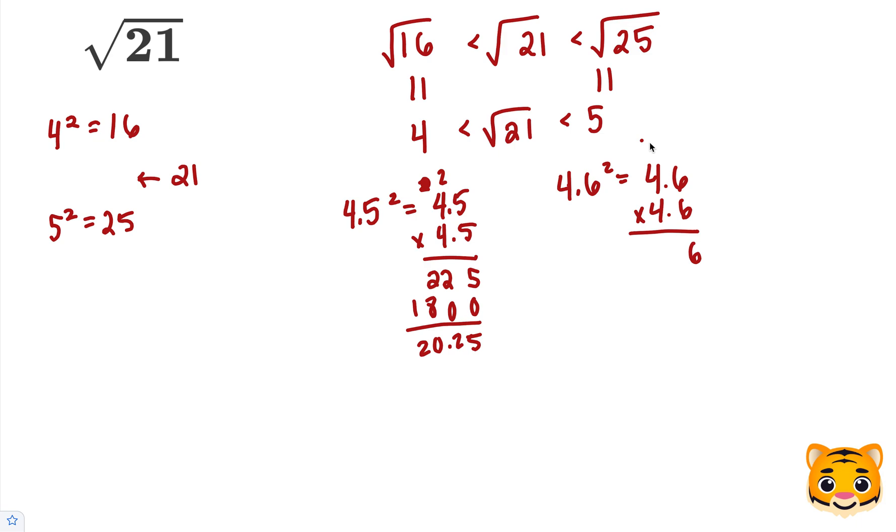6 times 6 is 36, carry the 3. And then 4 times 6 is 24, plus 3 is 27. Add our 0. 4 times 6 is 24, carry the 2. And then 4 times 4 is 16, plus 2 is 18.